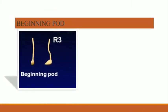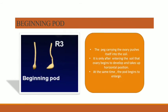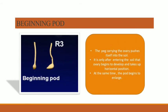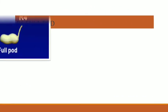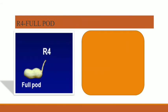At the beginning pod stage, the peg carrying the ovary pushes itself into the soil. It is only after entering the soil that the ovary begins to develop and takes up the horizontal position. At the same time, the pod begins to enlarge and the growth stages of the pod increase.